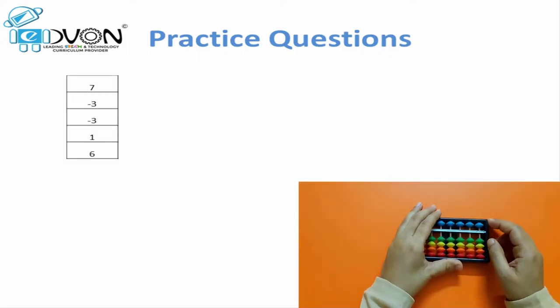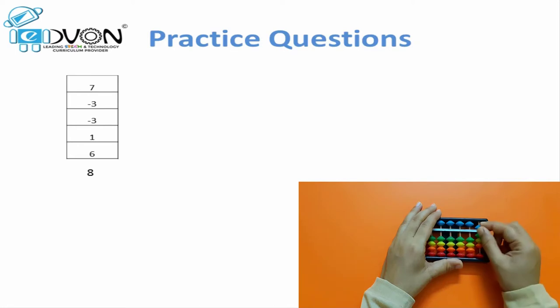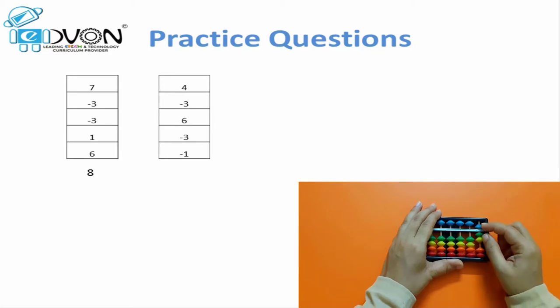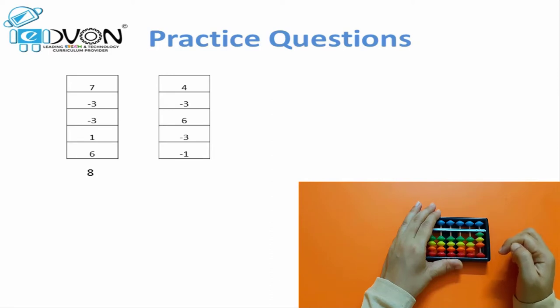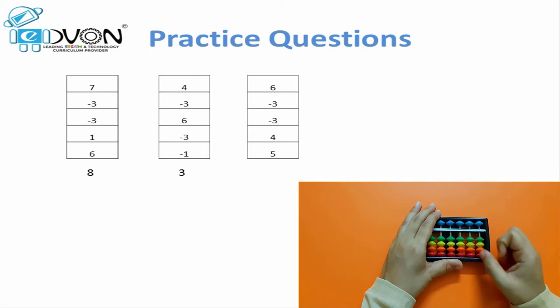Let's practice the application of minus 3 on abacus as well. First question: 7, minus 3, minus 3, plus 1, plus 6 — answer 8. Next question: 4, minus 3, plus 6, minus 3, minus 1 — answer 3. Next question: 6, minus 3, minus 3, plus 4, plus 5 — answer 9.